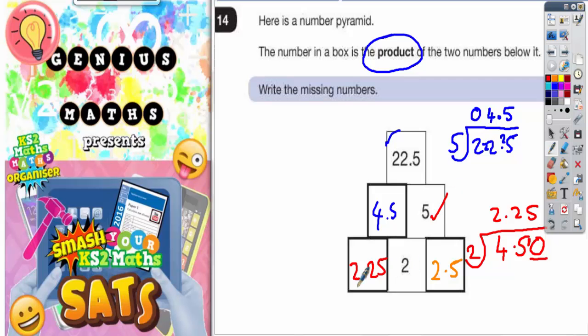2 times 2.25 - let's double check. 2 times 5 is 10, put the 0 in, carry the 1. 2 times 2 is 4, plus 1 is 5. And 2 times 2 is 4. So we've got 4.50, and 4.50 is the same as 4.5. That works.